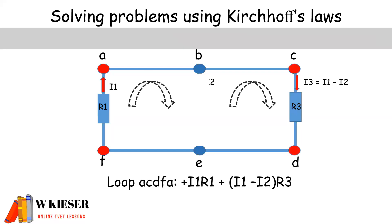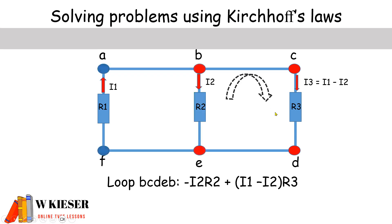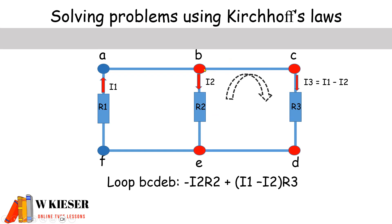And then we multiply by R3, which gives us the potential difference across the load. Now our final loop will be B, C, D, E, and B. Here you'll notice that I2 is opposing the direction of clockwise, so therefore it will be negative. To calculate the potential difference using Ohm's Law, it is I2 times R2. Now I3, which equates to I1 minus I2, is in the same direction as the clockwise direction, so therefore it's going to be positive.